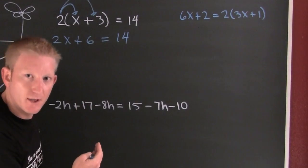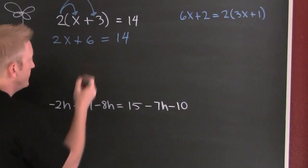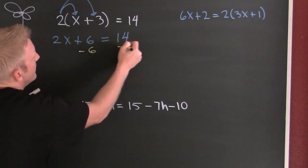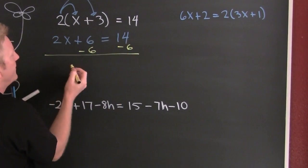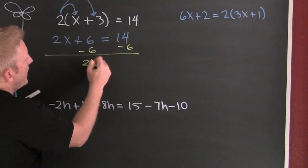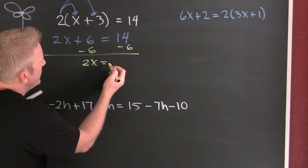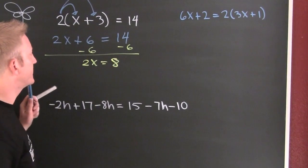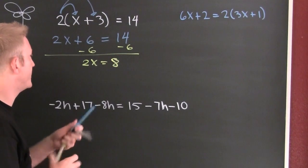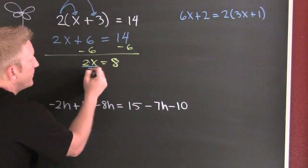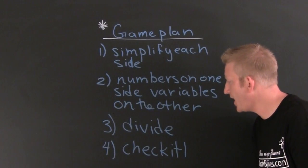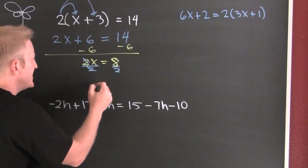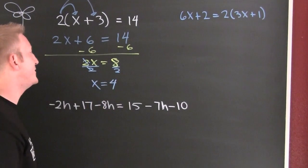Numbers on one side, variables on the other. This one is remarkably similar to the last one. So I undo the addition with a little bit of subtraction — I subtract 6 off each side. 2x is 8. I'm undoing the multiplication with a little bit of division. Divide both sides by 2, and x is 4.